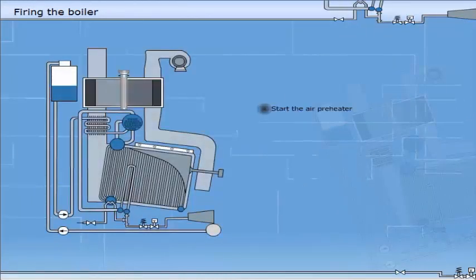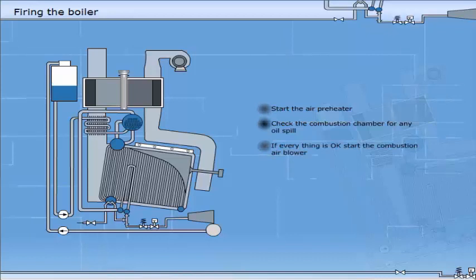Start the air preheater. Check the combustion chamber for any oil spill. If everything is okay, start the combustion air blower. Purge for 2 to 4 minutes at full capacity.